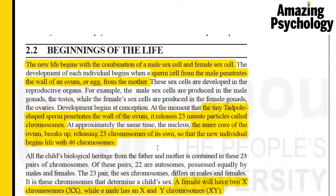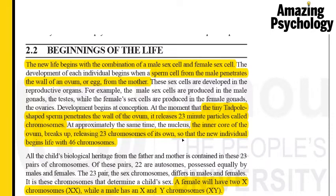In section 2.2, new life begins with the combination of a male sex cell and a female sex cell. The sperm cell penetrates the wall of the ovum — also called the egg — and releases 23 chromosomes containing the genetic material of the father. Similarly, the egg also releases 23 chromosomes from the mother. Together, the 23 chromosomes from the father and 23 from the mother give the new individual a total of 46 chromosomes.